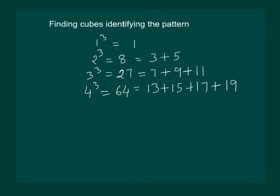Similarly, for 4 cube, we are starting with the next odd number to 11, which is 13. So, we start with 13. Then, next number is 15, 17 and then 19.